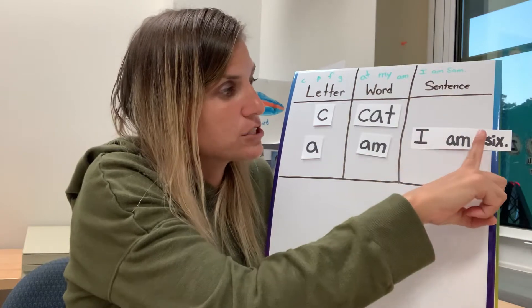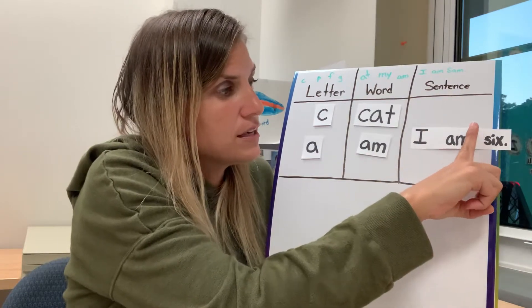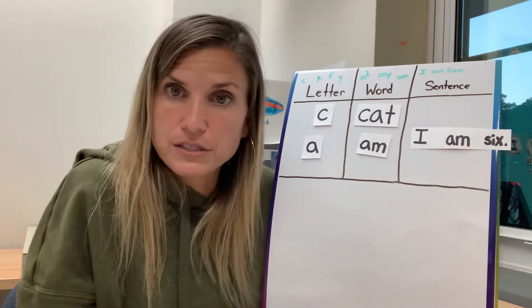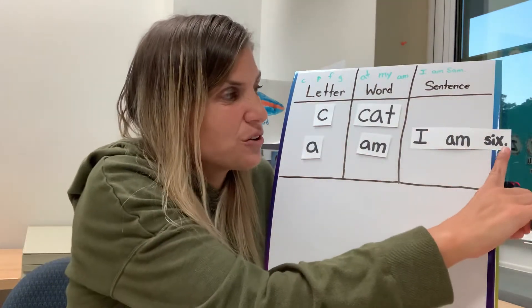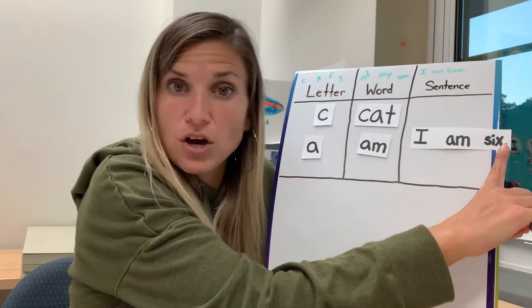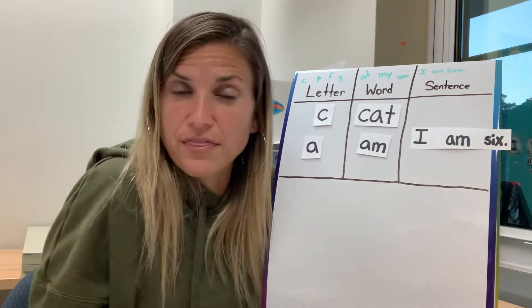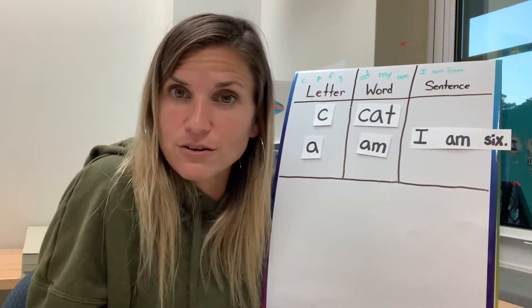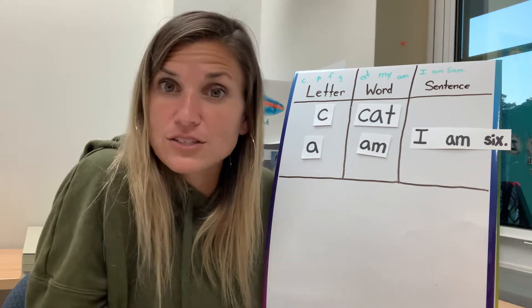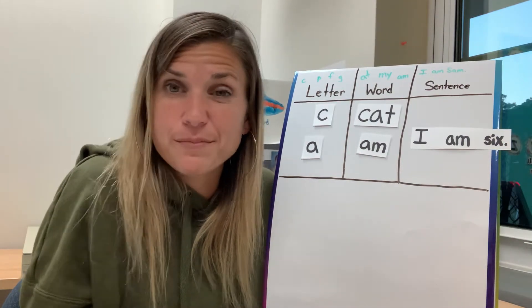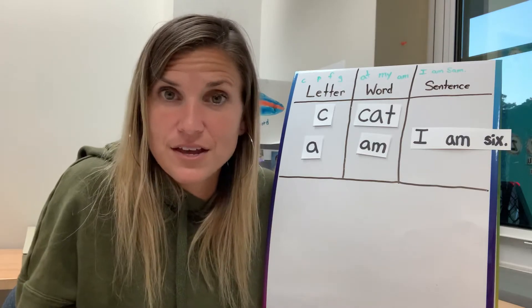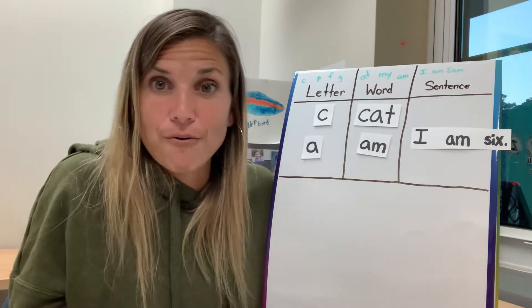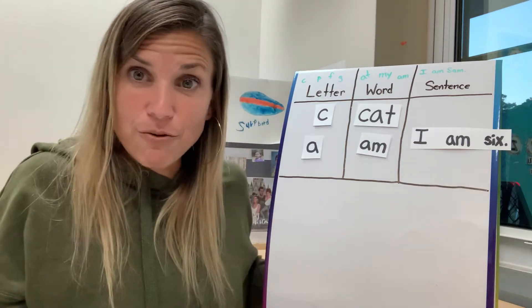I know that they're words because I have a finger space in between my words, so it helps me. The other clue is that punctuation on the end — that little dot at the end is called a period, and it means the end of the sentence.